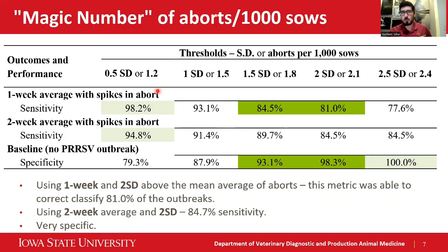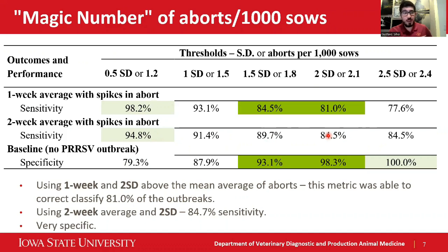That would be five or six abortions in a 5,000–6,000 sow farm. However, with that lower threshold we have low specificity. So if we can target something between 1.2 and 2.1 abortions per thousand sows, based on the results I'm showing here, this indicator can be a very good indicator to trigger investigations. Higher abortions — go and do something or check something out.